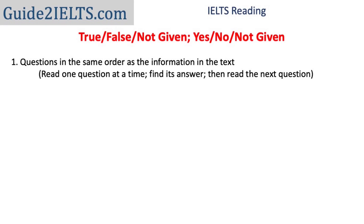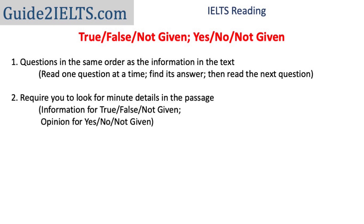The questions are in the same order as the text. For all such questions, we read one question at a time, figure out its answer, and then move on to the next one. These question types require you to look for minute details in the passage. You're looking for information in case of true-false-not-given, and opinions in case of yes-no-not-given.